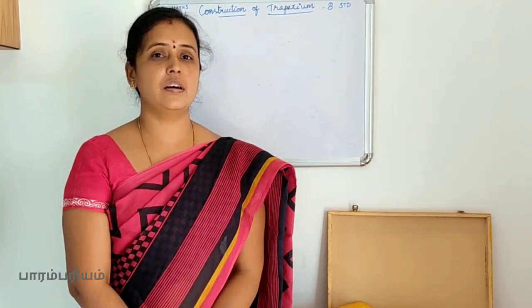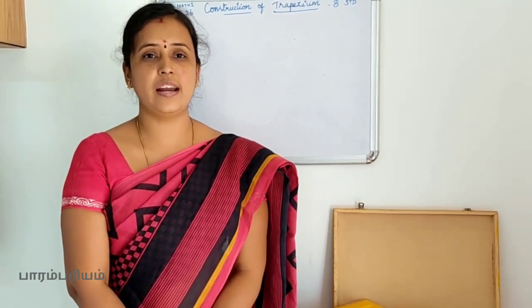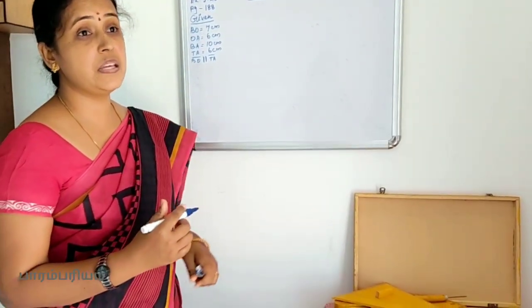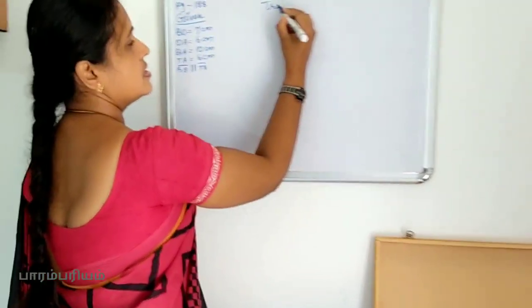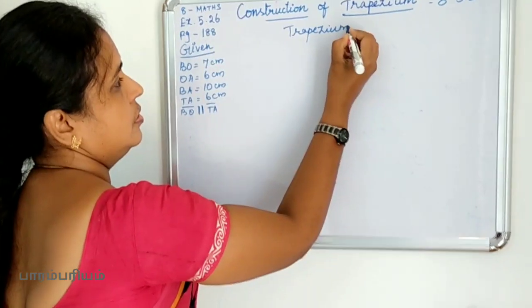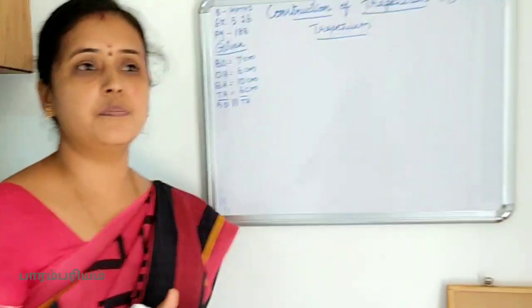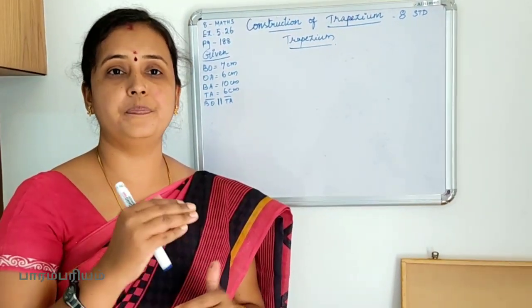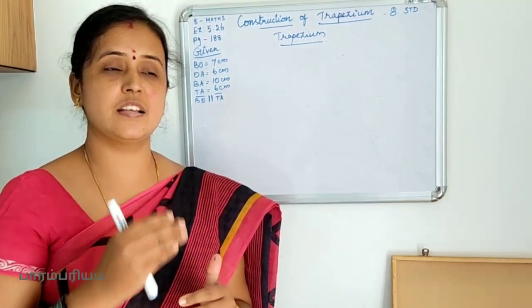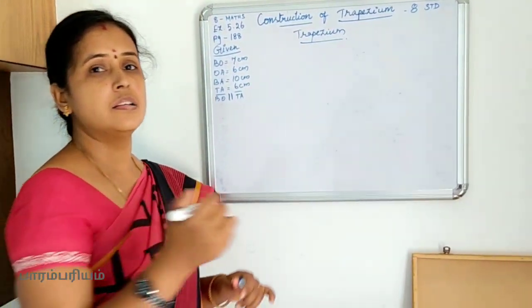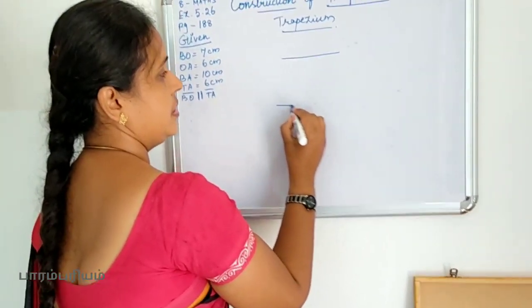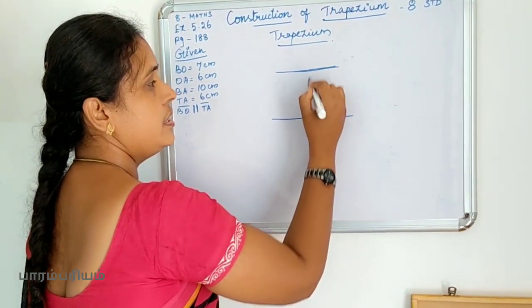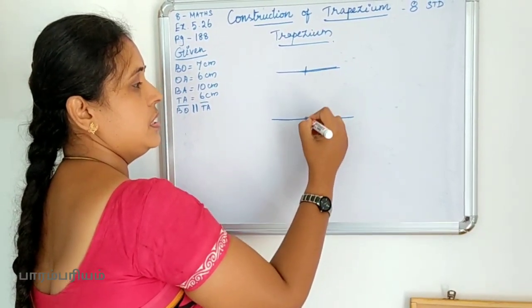Today we are going to see another special quadrilateral which requires only four measurements. That is called a trapezium. Trapezium is a quadrilateral in which one pair of opposite sides are parallel.